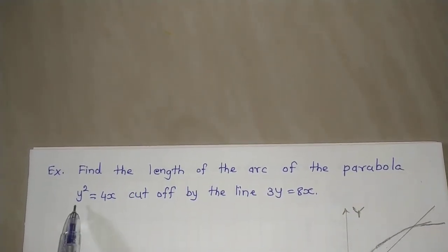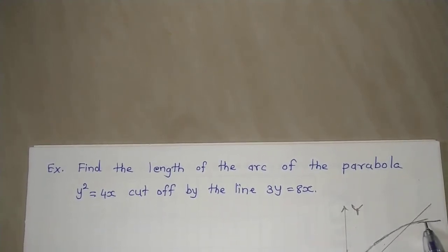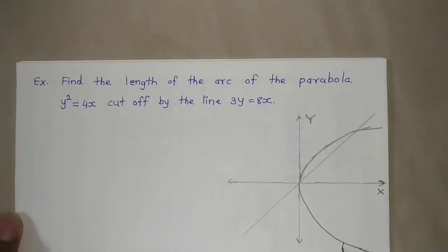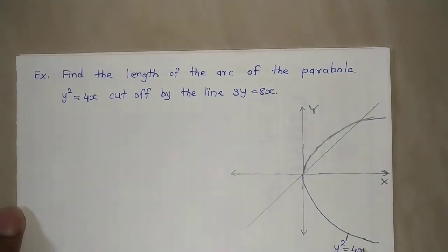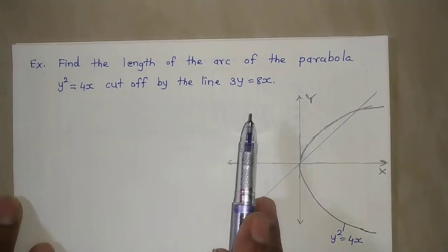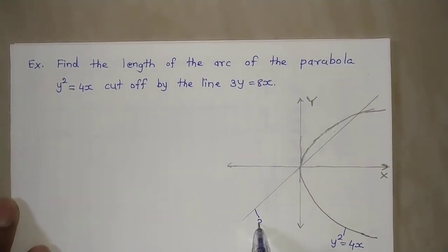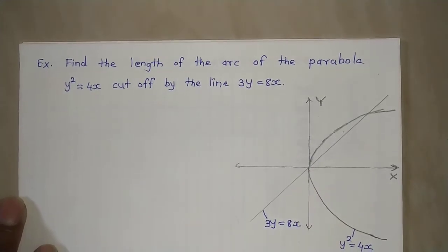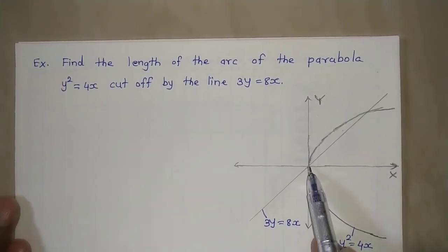Now y² = 4x is the standard parabola, given by this curve. And the second equation is the line 3y = 8x. First of all, let us find out the points of intersection.